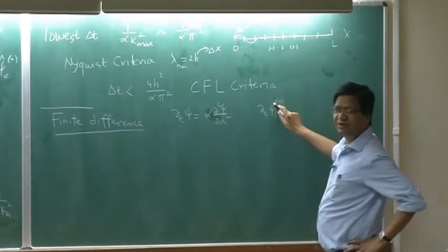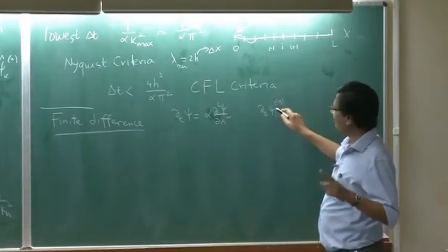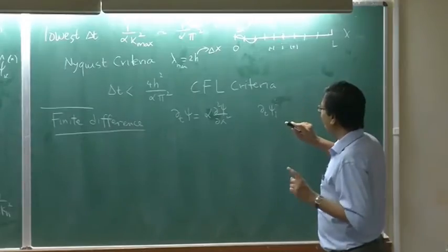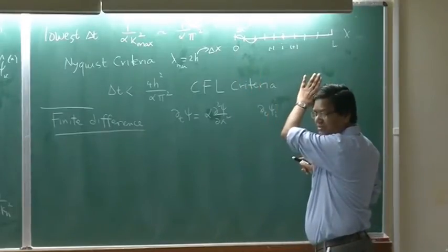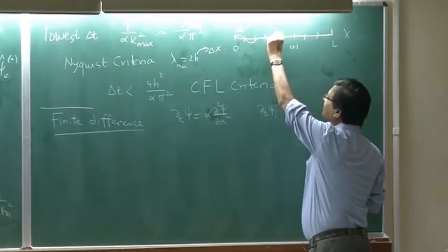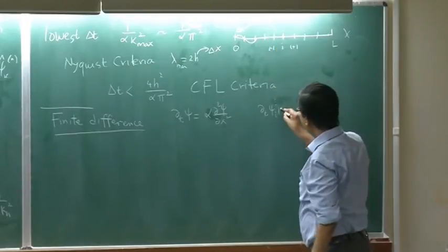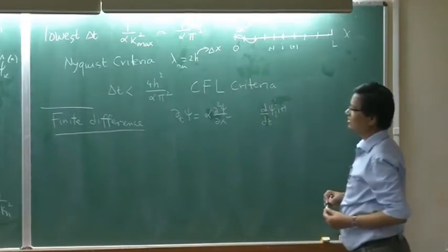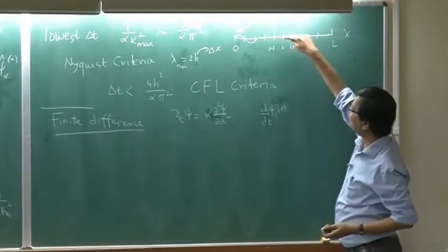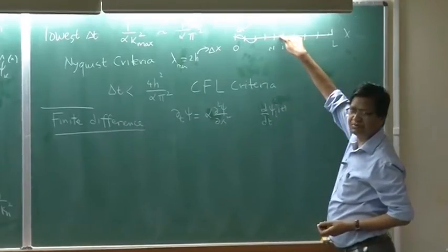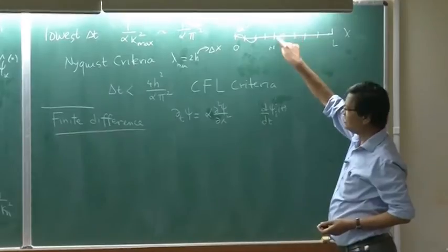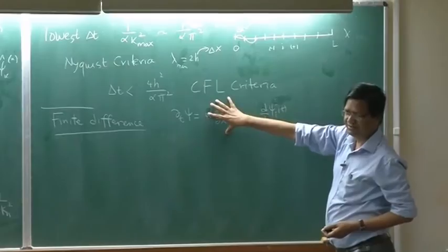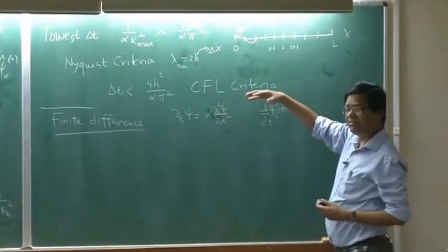Let this be my variable at time index n. This is the time index. What I am trying to do here is convert this to ODEs, with the value of the function at every time t. I focus on this point at time t.